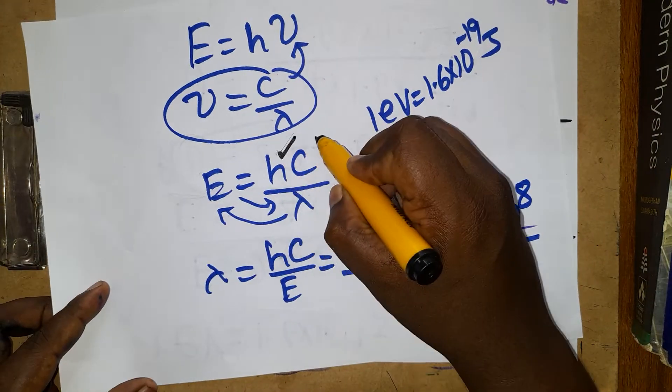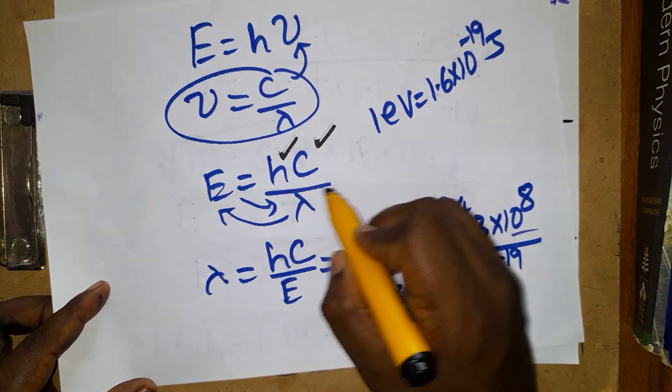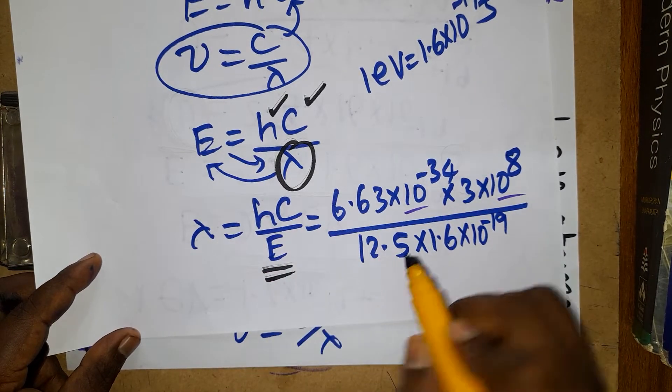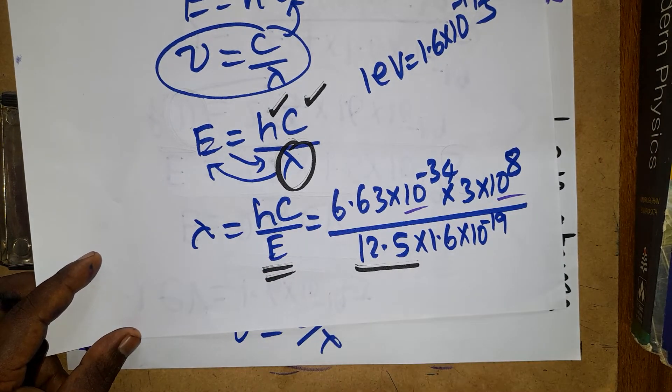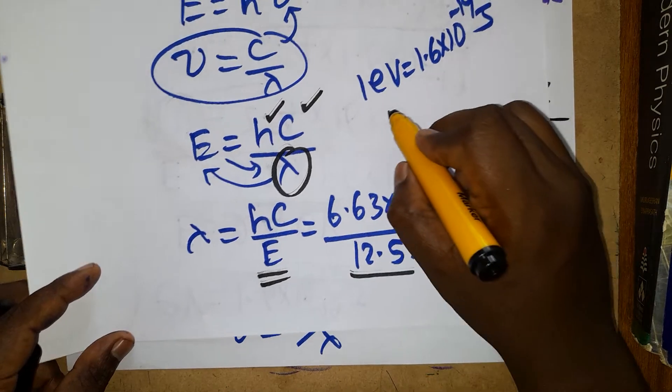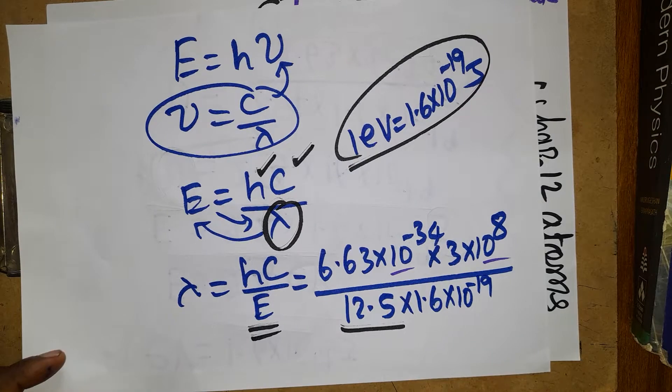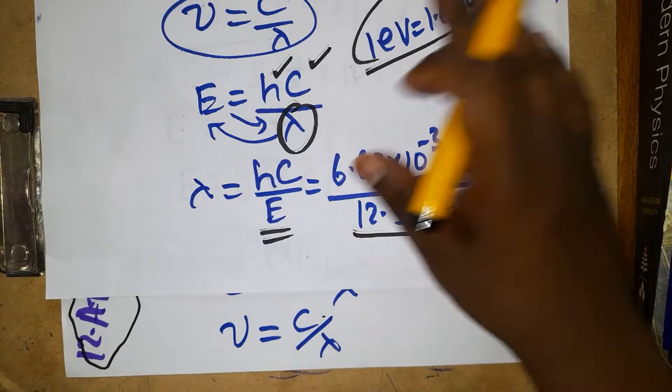H is called Planck constant, c is the velocity of light, and wavelength is what we are going to find. Just modify the formula so energy will come as the denominator. Energy is 12.5 eV. We need to know that 1 eV equals 1.6 into 10 power minus 19 joules.